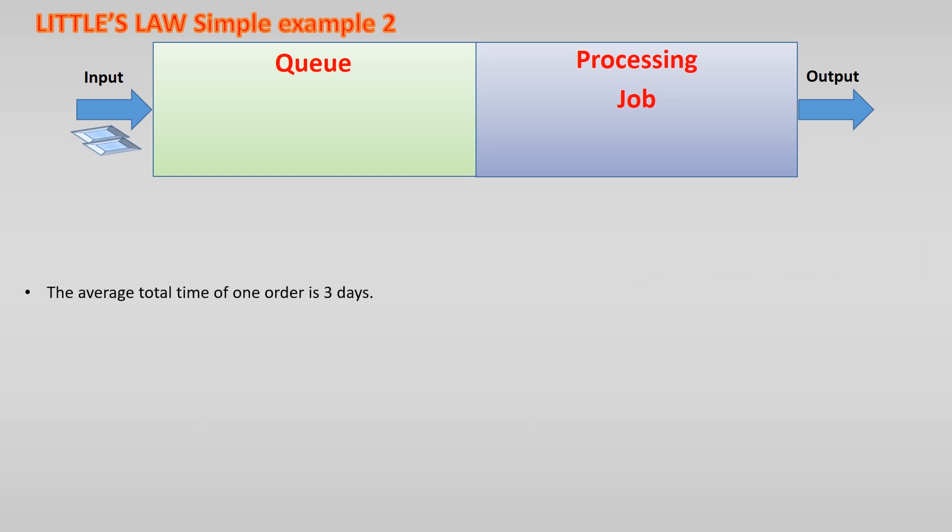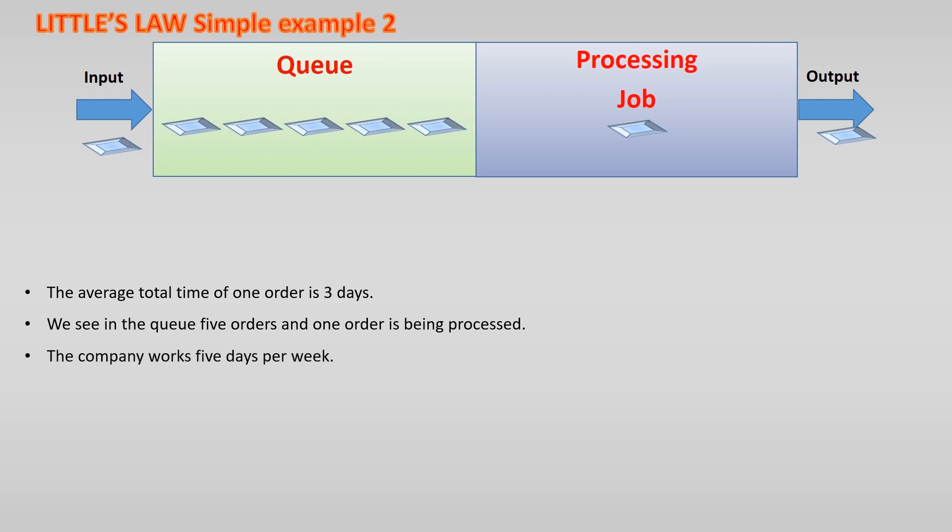Let's take another simple calculation. Now, we have a similar production system and the average total time for one order is 3 days. We go to the shop floor a few times this week and we see that usually 5 orders wait in the queue and one order is being processed. This company works from Mondays till Fridays.